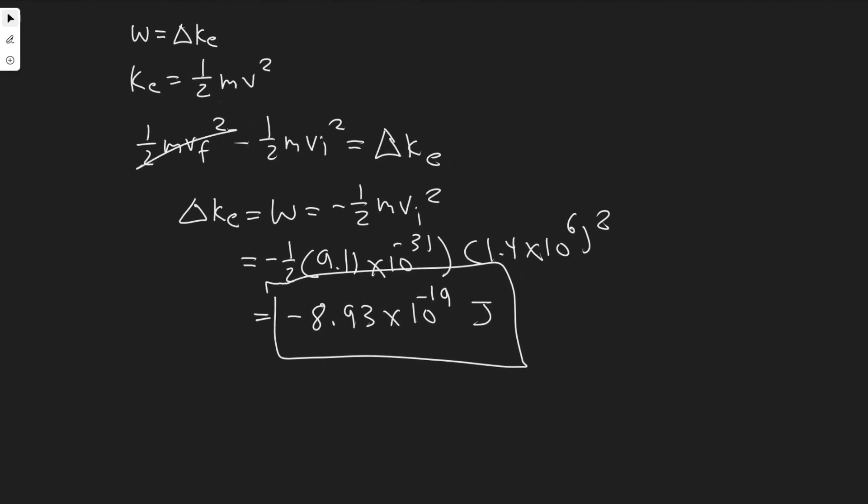But yeah, so minus 8.93 times 10 to the minus 19, that's going to be how much work is required to stop an electron. So this is going to be your answer, and hopefully you found this useful.